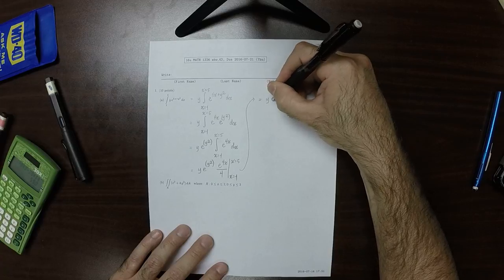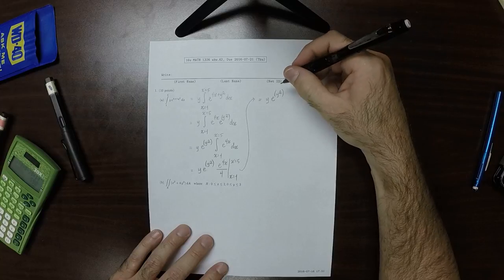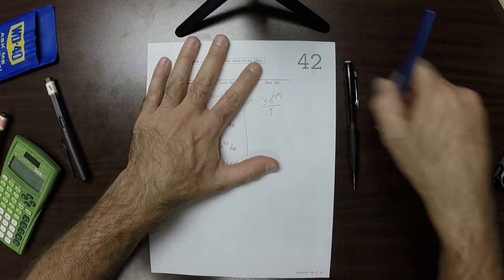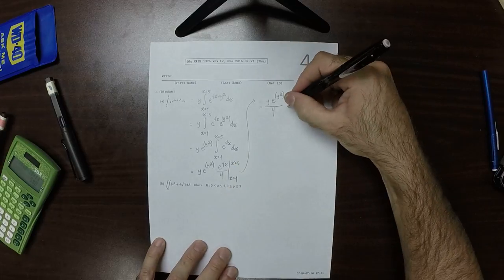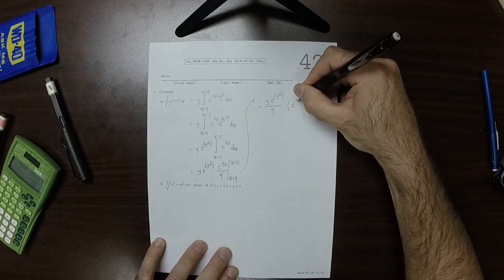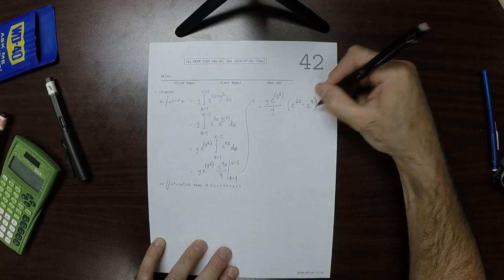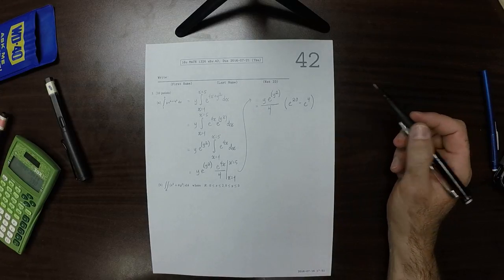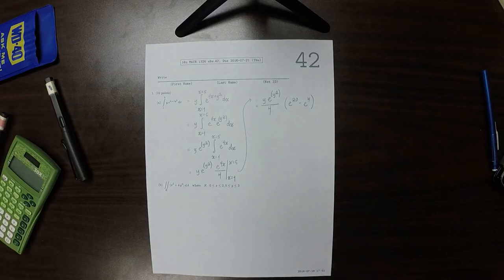So, that's y e to y squared. And then I'll factor out the division by 4. And plug in those values. Exponential of 20 minus exponential of 4. So, that's the answer to part A. Notice that it depends on y, but no longer depends on x.